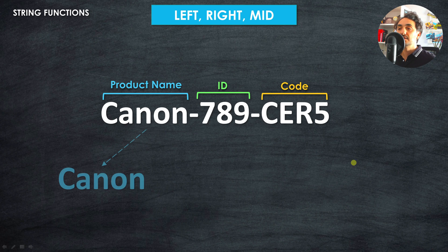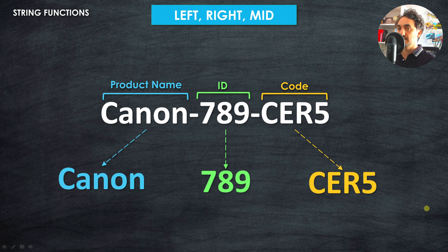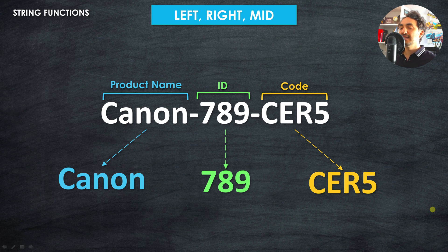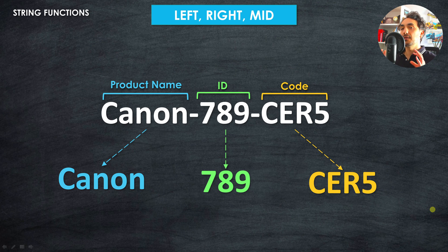In visualizations we might be interested in only one piece of information — just the product name like 'Canon', or only the ID like 789, or only the code. So we need functions in Tableau to extract those pieces of information and split one field into three fields. One way to achieve this is using the LEFT, RIGHT, and MID functions.